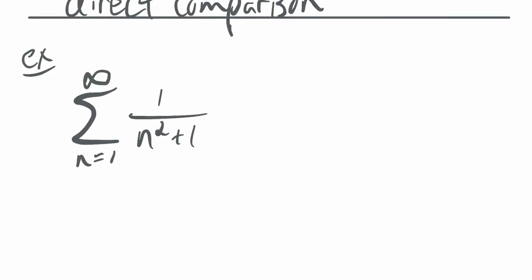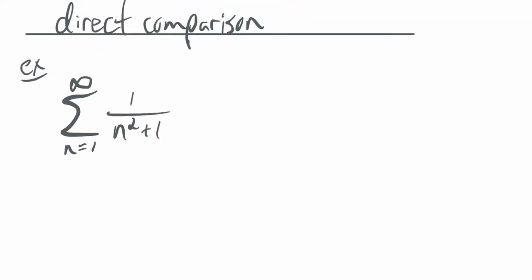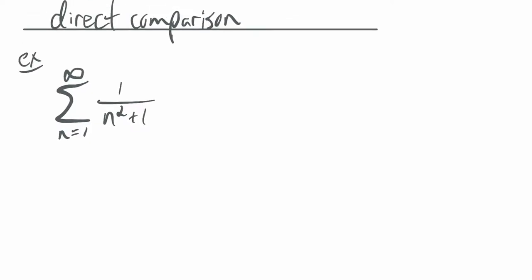Looking at this series, this is not a P-series, right? This is not the form 1 over n to the P power. That plus 1 is preventing it from being that. But what we can do is say, can we compare this with a P-series? So can I say, for example, that 1 over n squared plus 1 is greater than or equal to, or less than or equal to, some other sequence that I know about? I'll give you two examples.